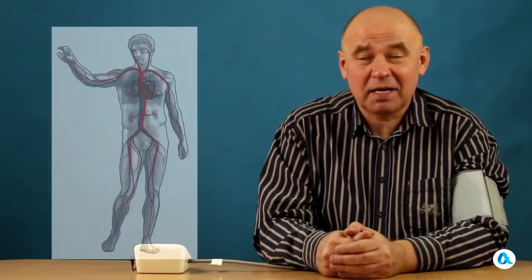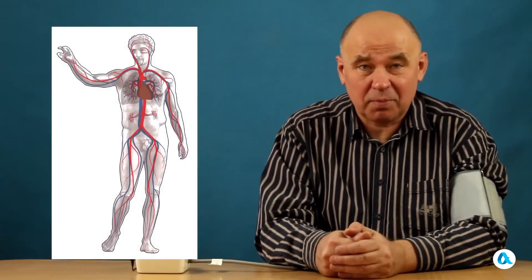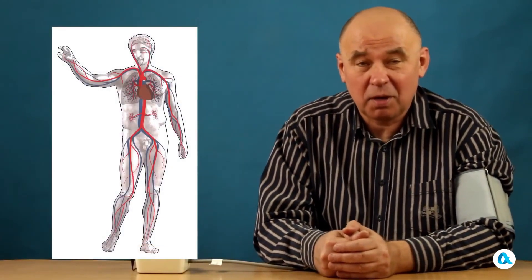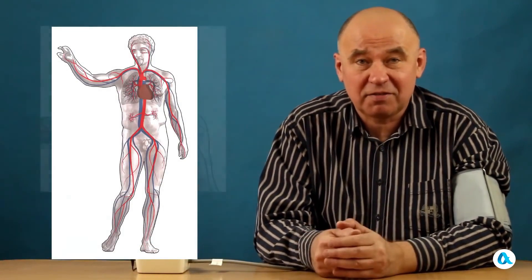First of all, it's important to understand that the heart is a pump that circulates blood through the systemic and pulmonary circuits. And since blood vessels have some resistance to the flow of blood, additional pressure needs to be created for the blood to pass through these vessels, which is what the heart does. And it does this through pulsations.